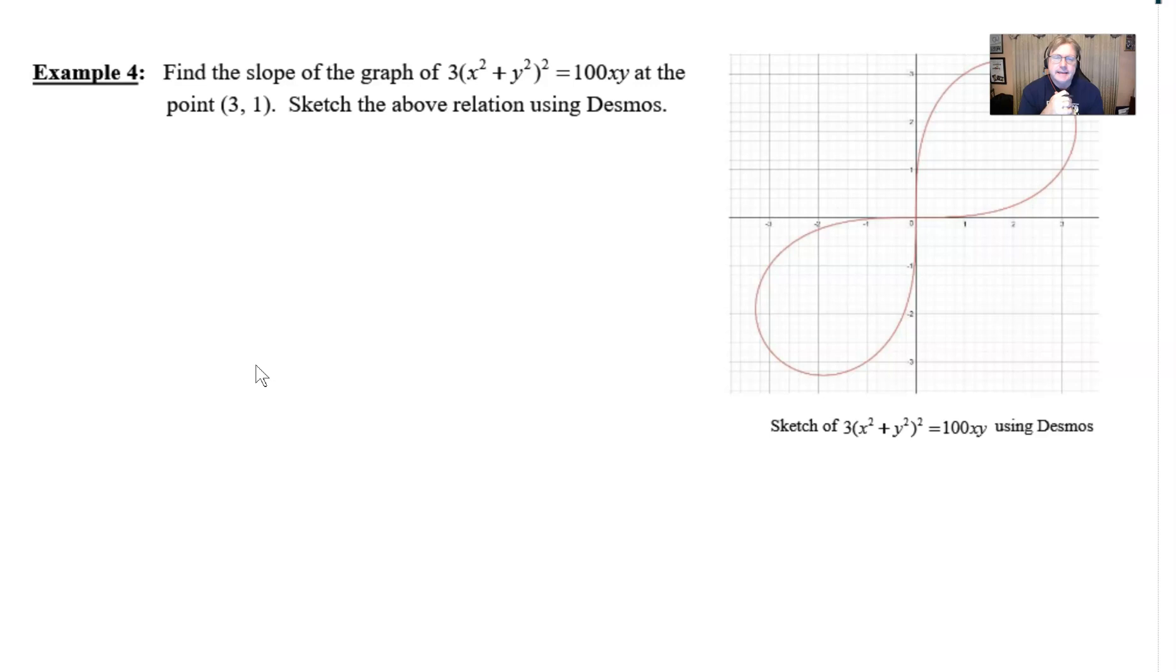Find the slope of the graph of 3(x² + y²)² = 100xy at the point (3, 1). And it mentions that we want to sketch this relation using Desmos and it just happens that I've done that for us already so that we don't have to bother with that because I wanted to just expose you to the beauty that is so many of these implicitly written equations. They graph some of the most remarkable things all throughout mathematics and we also notice that the point (3, 1), it's not messing around, we're not making this up, it is indeed a point that does lie on this sort of figure 8 type of curve.